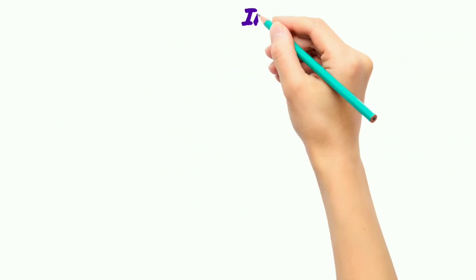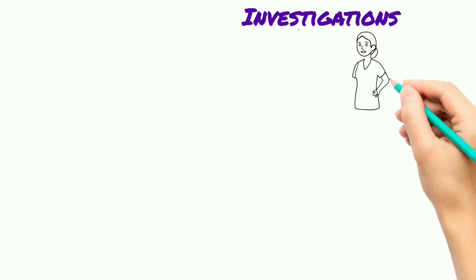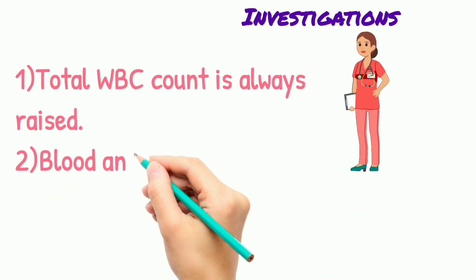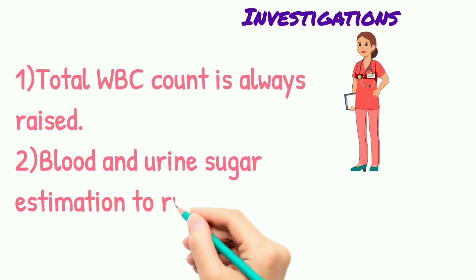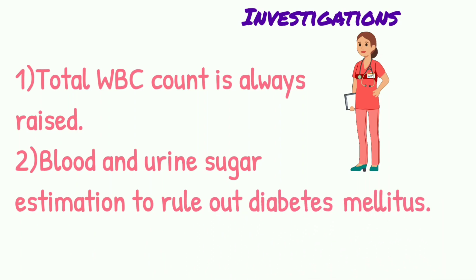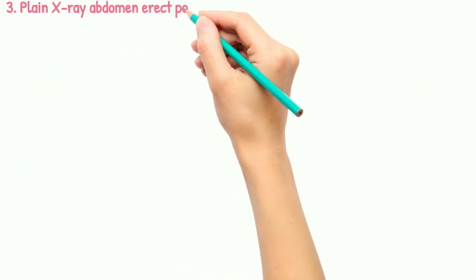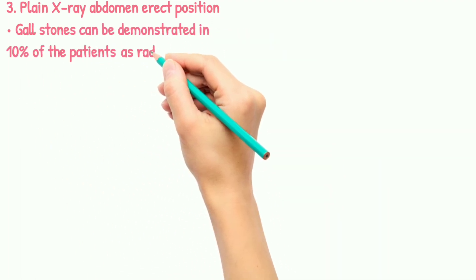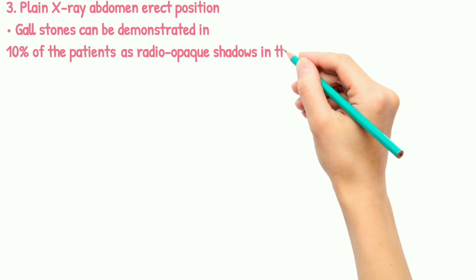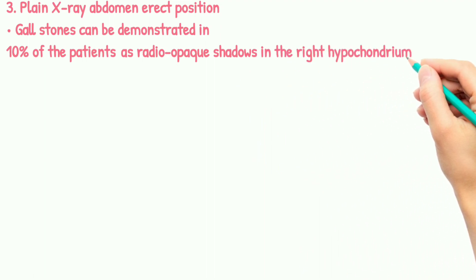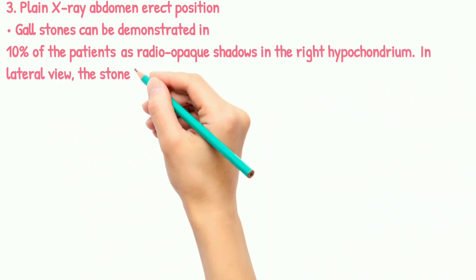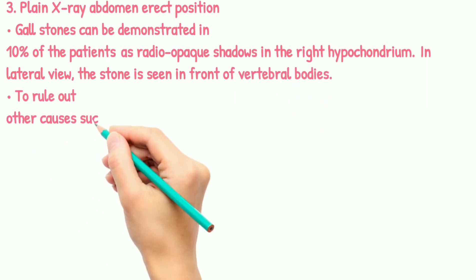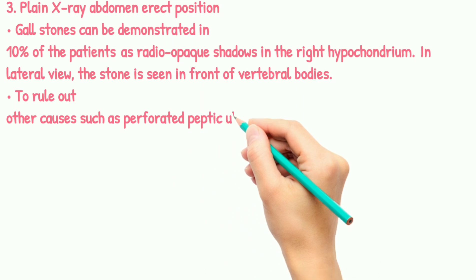Investigations: the total WBC count is always raised. Blood and urine sugar estimation is done to rule out diabetes mellitus. A plain X-ray abdomen in the erect position is taken; the gallbladder can be demonstrated in 10% of patients as radio-opaque shadows in the right hypochondrium. In the lateral view, the stone is seen in front of the vertebral bodies, and it helps rule out other causes such as perforated peptic ulcer, which appears as air under the diaphragm.